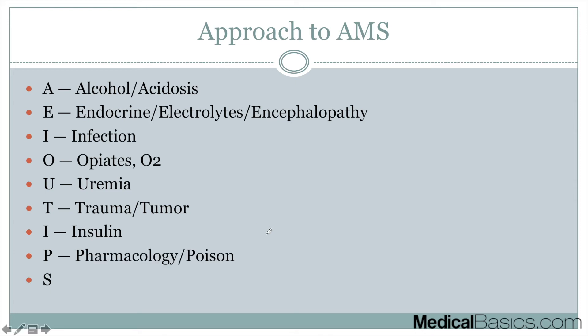P stands for pharmacology and poison. Different types of drugs can cause altered mental status, whether through respiratory depression like opioids or through direct effects on mental status. It can go both ways, and it's definitely something to keep in mind.